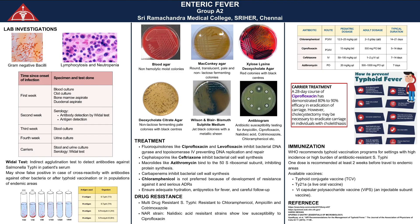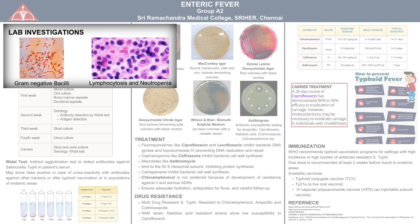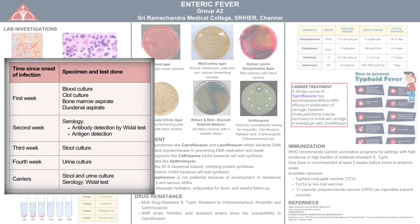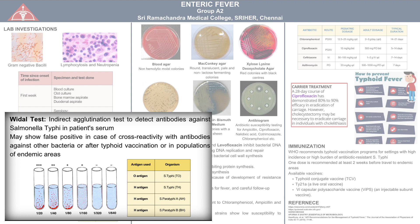Let's take a look at the lab investigations available to detect the presence of Salmonella species in infected persons. Non-specific blood tests such as blood count and blood smear show lymphocytosis and neutropenia. In the first week since onset of symptoms, blood culture and bone marrow culture show positive results. Blood culture is the most reliable test for detection of Salmonella typhi. Clot culture, a modification of blood culture, is found to be more sensitive. In the second week, serological tests like the Widal test for antibody detection turn positive. It is a type of indirect tube agglutination test used to detect antibodies against known antigens in the patient's serum. Only in the third and fourth week do stool and urine cultures show positive results as the Salmonella bacilli begin to be excreted.